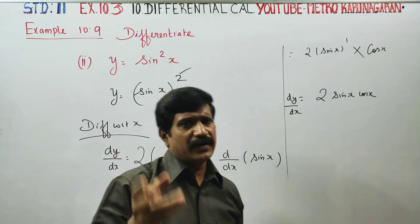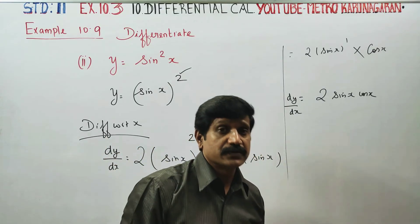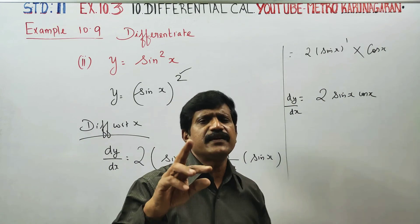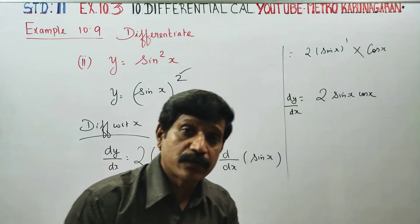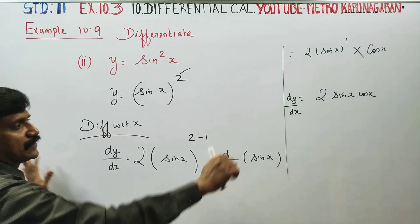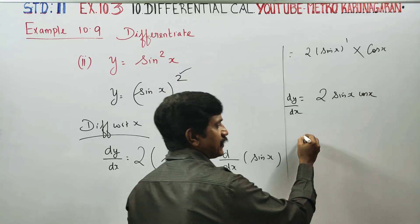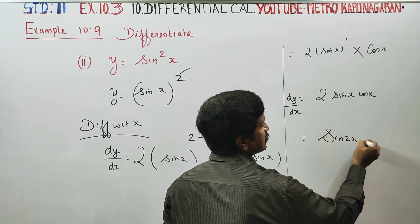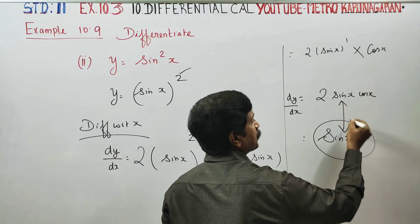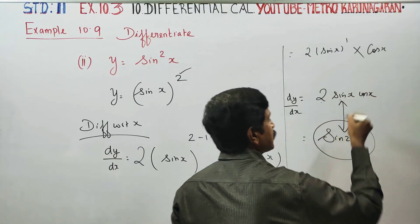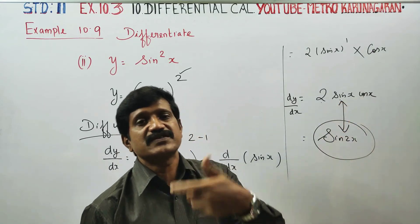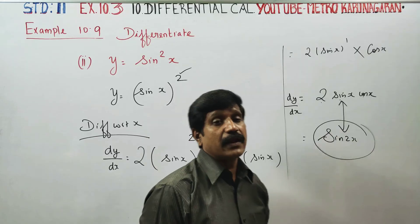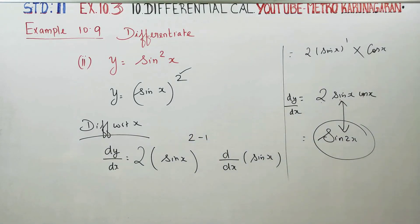And now using the trigonometry double angle formula: 2 times sin x cos x equals sin 2x. So this can also be written as sin 2x. This is the double angle formula from trigonometry. 2 times sin x cos x — substitute using the double angle formula. Your answer is 2 times sin x cos x or sin 2x.